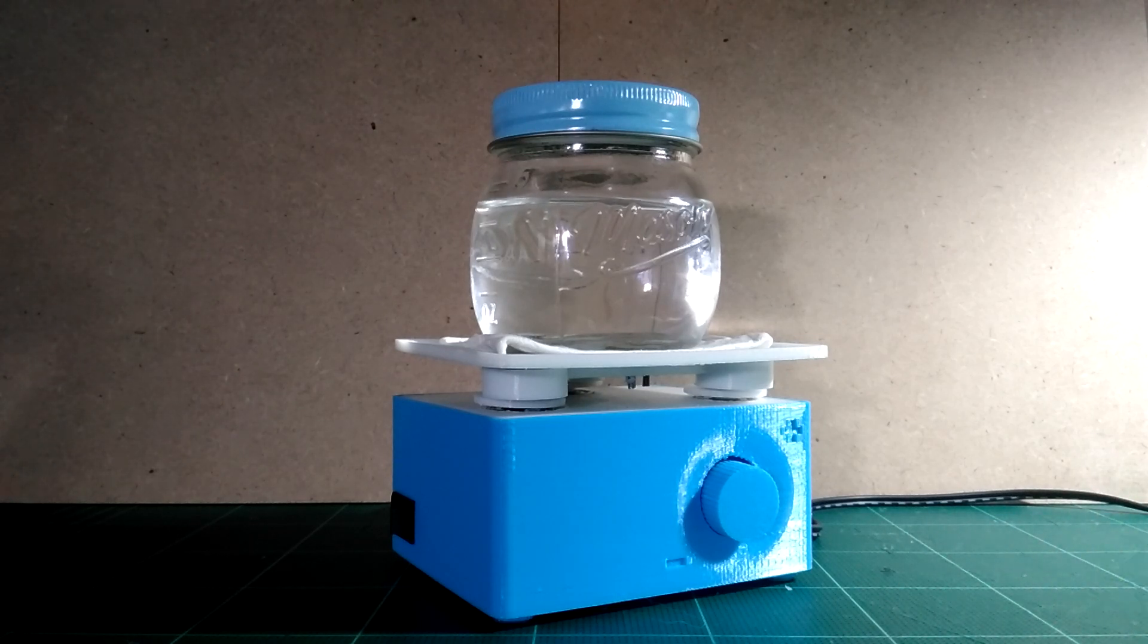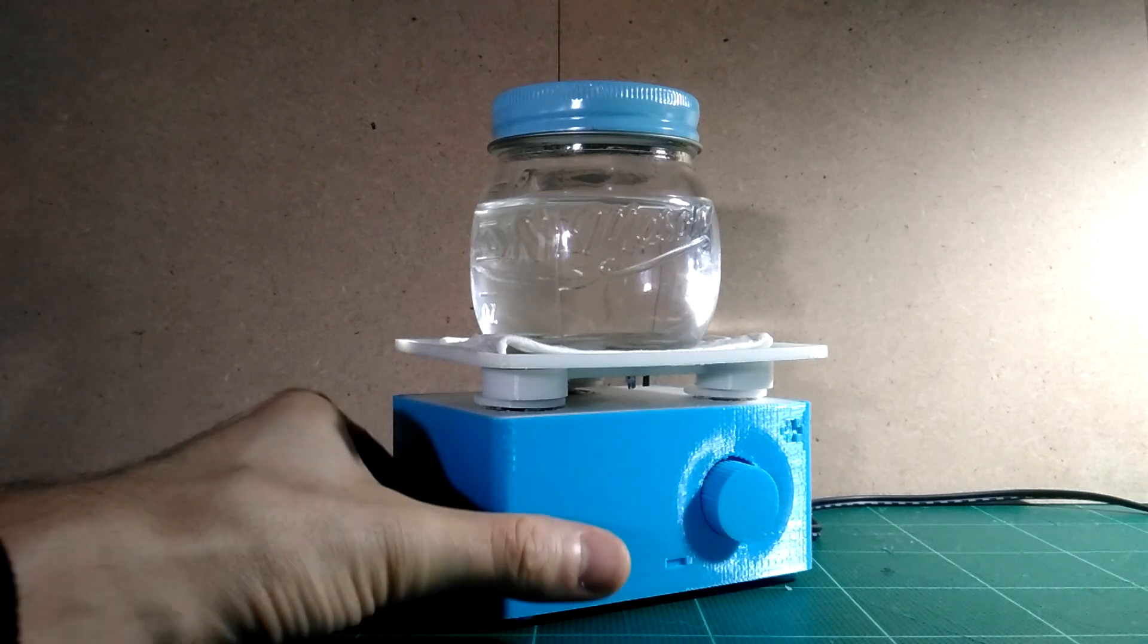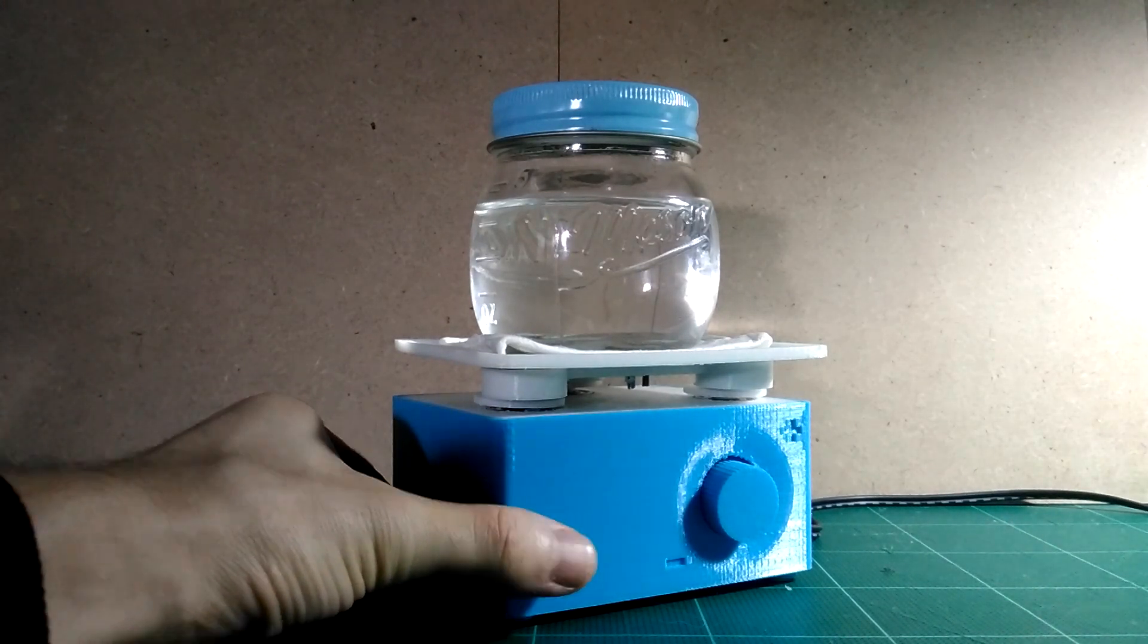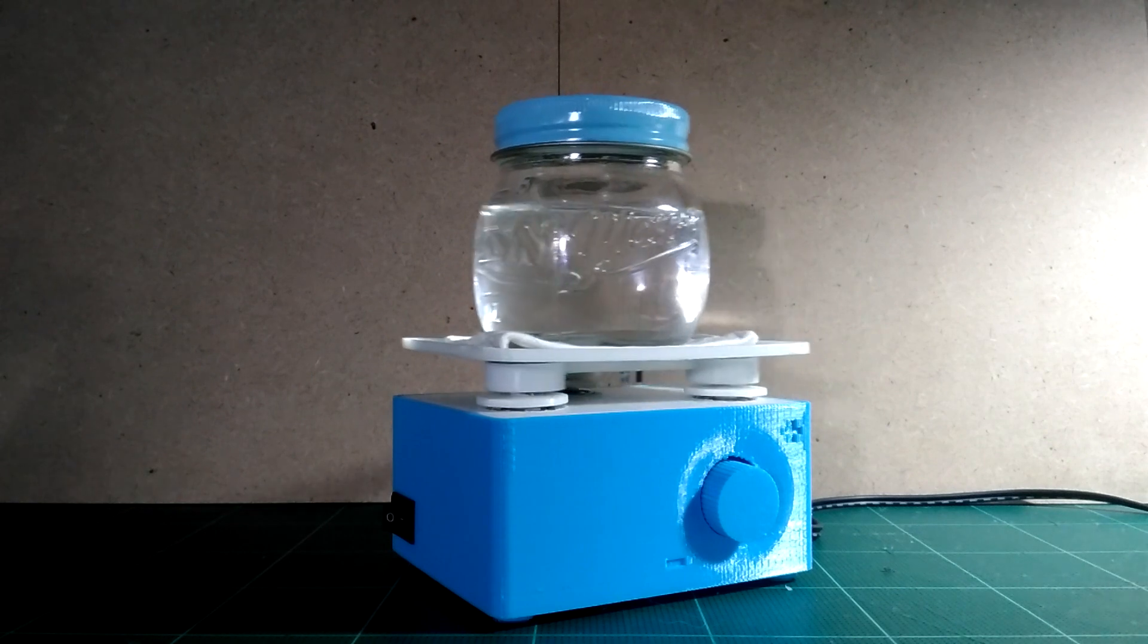This is the 3D printed orbital shaker. It has a power switch here. Switch it on and it's already moving.